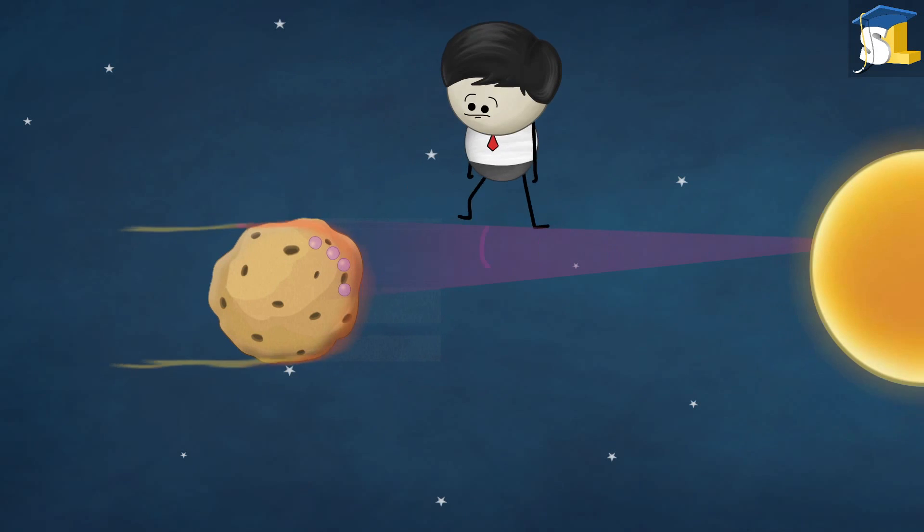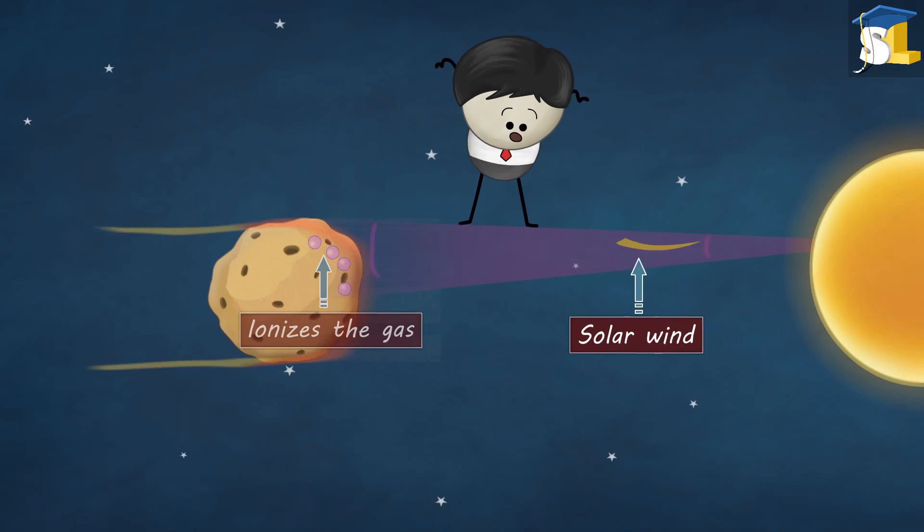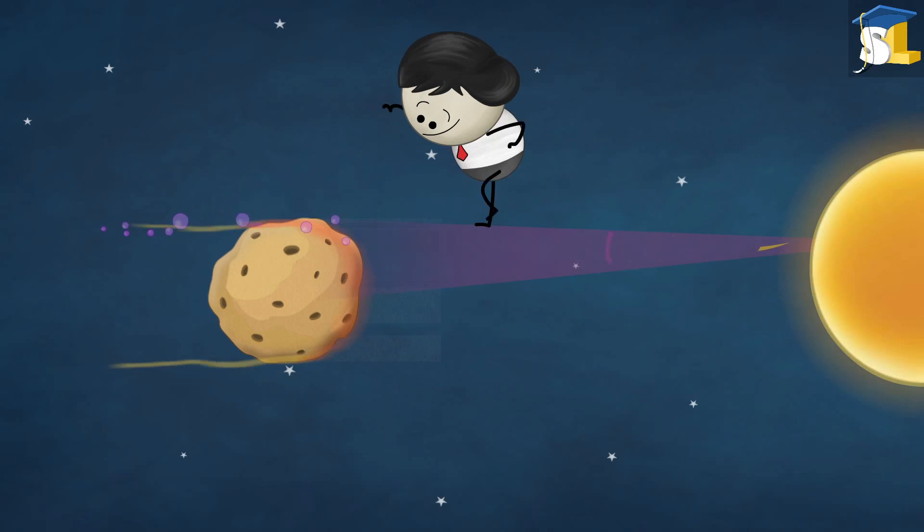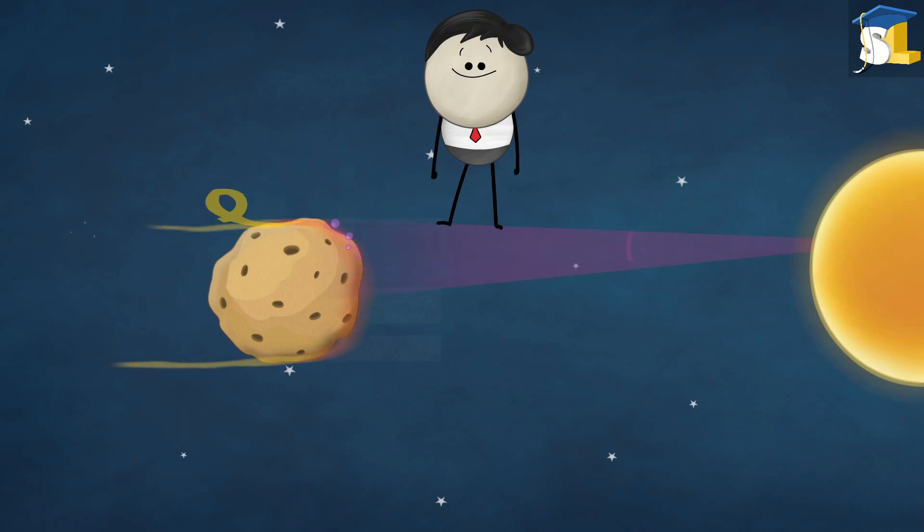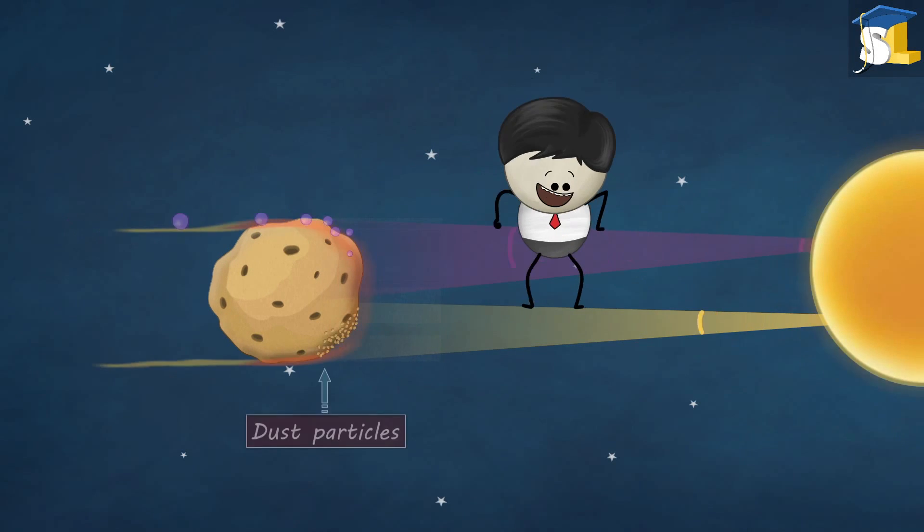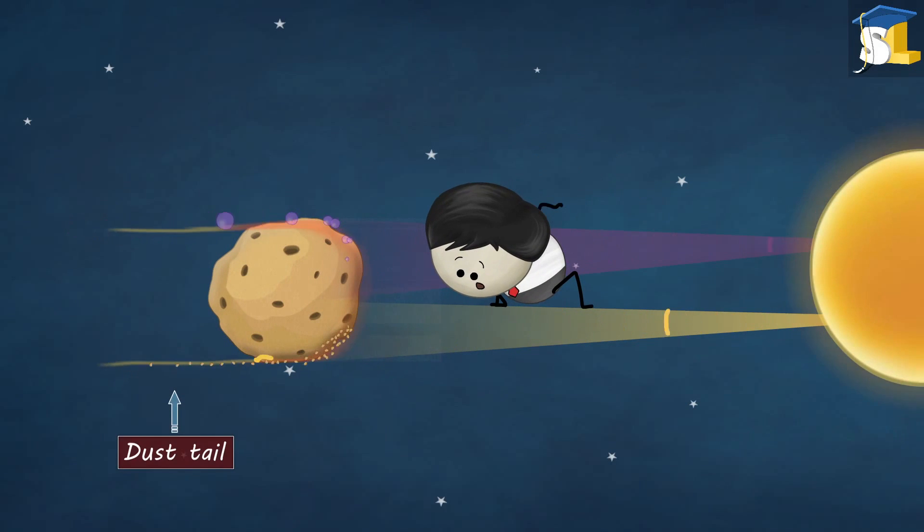The ultraviolet radiations from the sun ionize the gas. And the solar wind carries this ionized gas away from the sun, forming an ion tail. Whereas, the light from the sun exerts pressure on the dust particles and pushes them away, creating a dust tail.